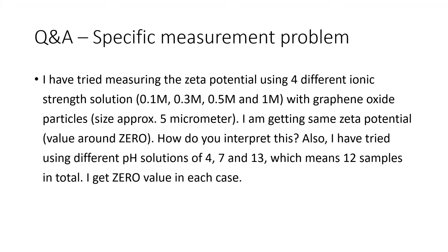Question. I have tried measuring the zeta potential using four different ionic strength solutions — 0.1, 0.3, 0.5 and 1 molar — with graphene oxide particles, size about 5 microns. I'm getting the same zeta potential, the value around 0. How do you interpret this?